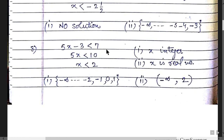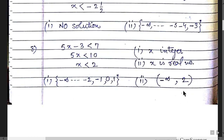Question 3: 5x - 3 < 7. This gives 5x < 10, so x < 2. If x is an integer, the values are 1, 0, -1, -2, and so on to minus infinity. For real numbers, including decimal values, the interval is (-∞, 2). Both brackets are open, meaning minus infinity and 2 are both excluded.